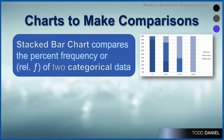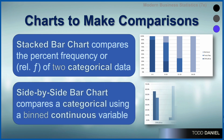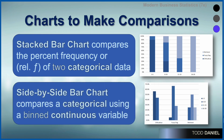If you want to display two variables at the same time, you should consider whether you want to make comparisons or explore relationships. To make comparisons, we have two specific types of bar charts. The stacked bar chart will show you the percent frequency or the relative frequency for your categorical data, whereas the side-by-side bar chart allows for those comparisons using typically a binned continuous variable.